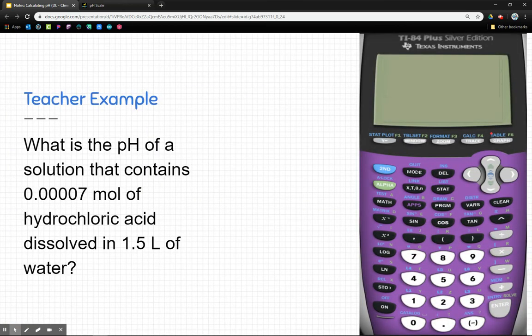So let's take a look at an example that you might see in the practice problems or the test. What is the pH of a solution that contains 0.00007 mol of hydrochloric acid dissolved in 1.5 L of water? So I'm looking here and I don't see a concentration. It's not telling me a concentration, but it is giving me moles and liters.